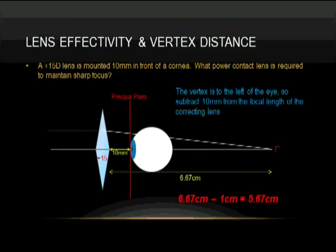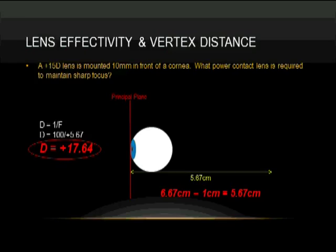Let's go back. A plus fifteen diopter lens, when moved one centimeter to the eye, is necessary to convert it to approximately a plus seventeen and a half diopter contact lens. That's what we're talking about.